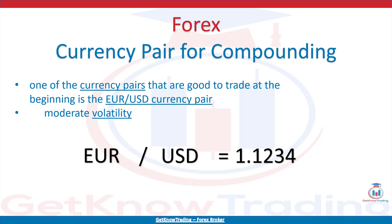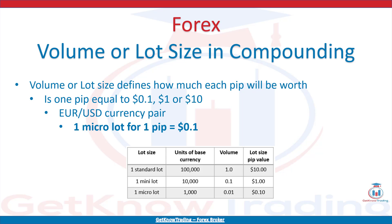When you have a currency pair, the next step is to define the volume or lot size you will use in each trade. Volume or lot size defines how much each pip will be worth - is 1 pip equal to $0.1, $1, or $10 or more? If you use the EURUSD currency pair, you do not have problems understanding the lot size for each pip. If you use micro lot size, you will have 1 pip equal to $0.1. Here is a table with other lot sizes so you know which one to use in trading.